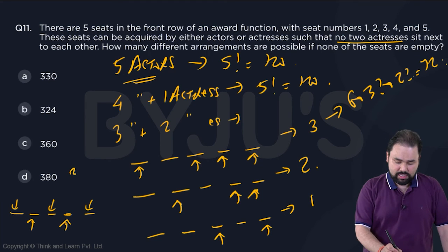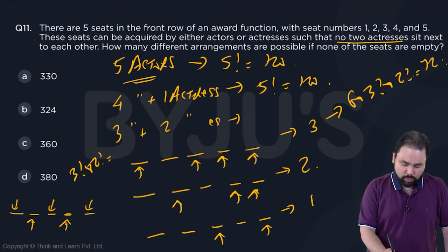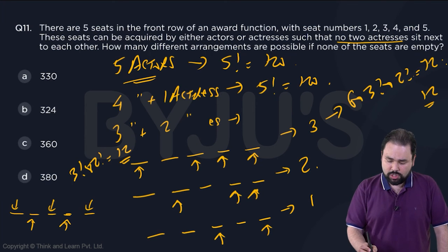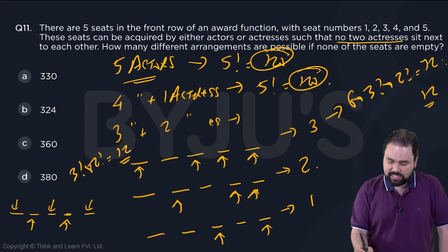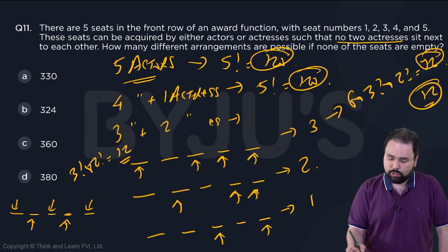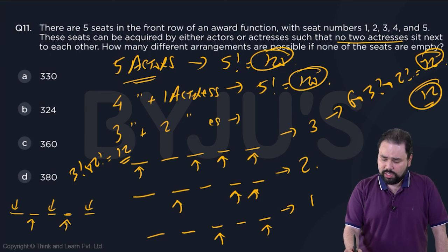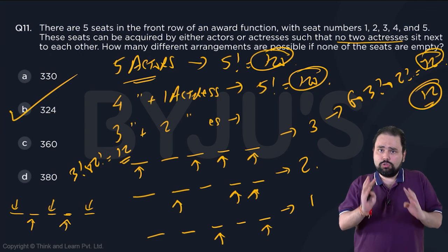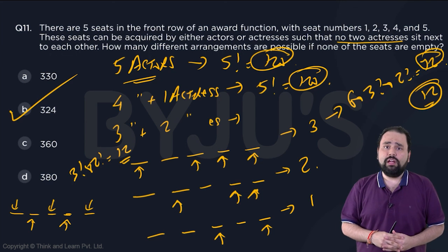So add another 12 for the last. First case 120, second case 120, third case 72, fourth case 12. So that's 240 and 72, that's 312 plus 12, which equals 324, which is option B. So four possible cases, all four have gone ahead and worked out. Clear?